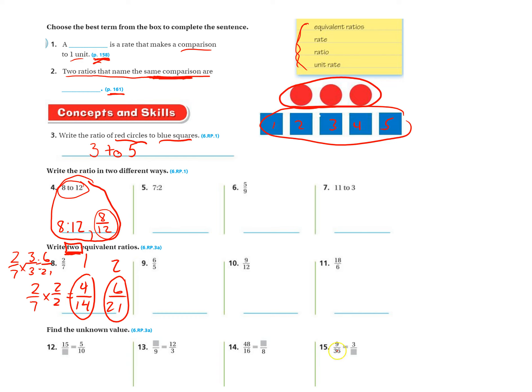Twelve, thirteen, fourteen, and fifteen. Find the unknown value. Let's jump to number fourteen. I'll show you how to do fourteen, and then you should be able to do the other ones.